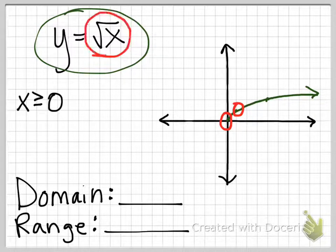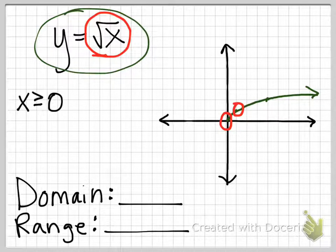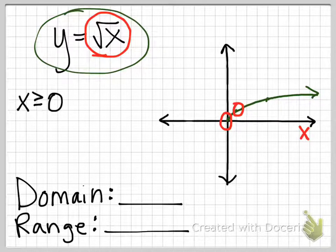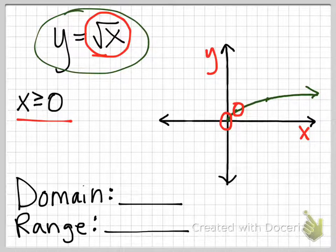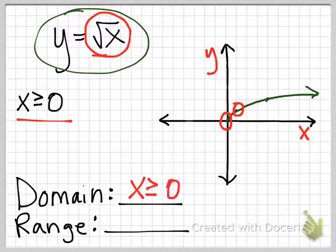Notice that when we take the square root of any number, it has to be greater than 0. We cannot take the square root of a negative number on a real number line, which is what we're dealing with here on our x-y axis. So we don't have imaginary numbers here — we only have square roots of positive numbers. So all of my domain has to be greater than or equal to 0.